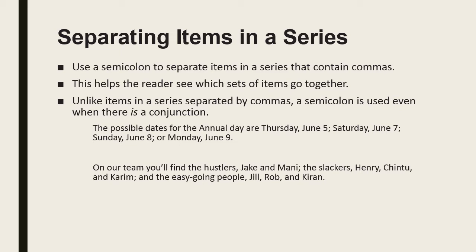Another example: 'On our team you will find the hustlers, Jake and Money; the slackers, Henry, Chintu, and Kareem; and the easy-going people, Jill, Rob, and Kiran.' The team is divided into three groups — hustlers, slackers, and easy-going people — and within each group the names are separated by commas. Semicolons separate the groups from each other. In summary, we use a semicolon to separate items in a series that already contain commas.